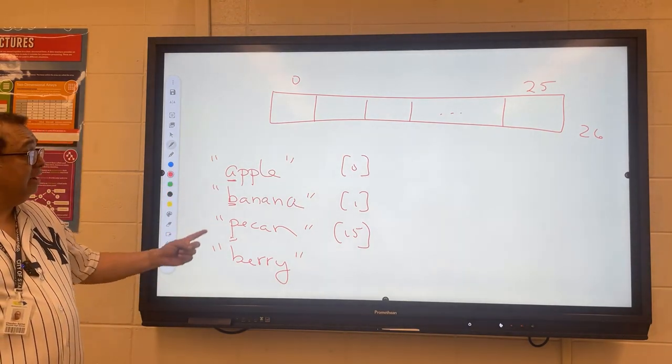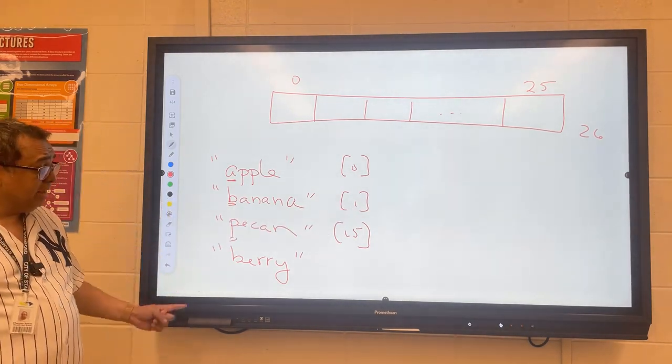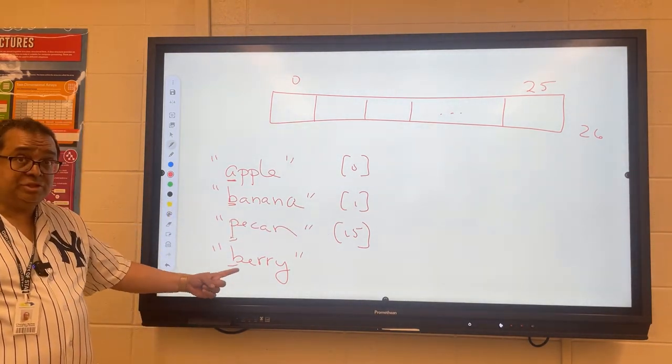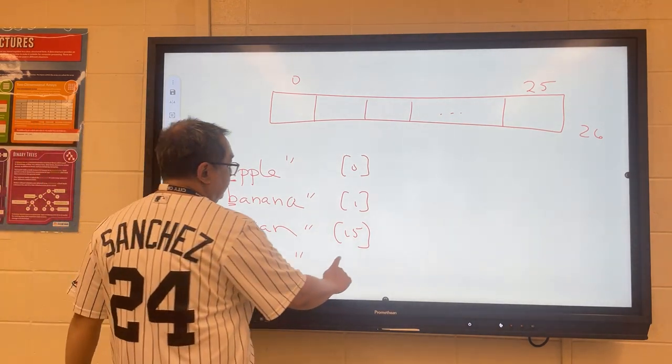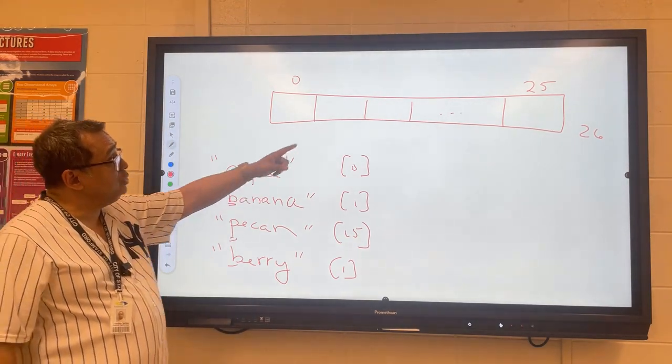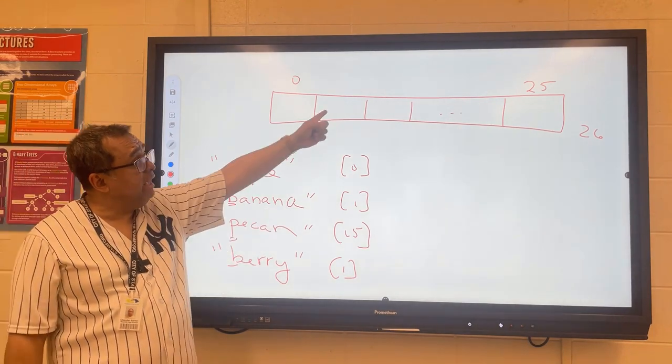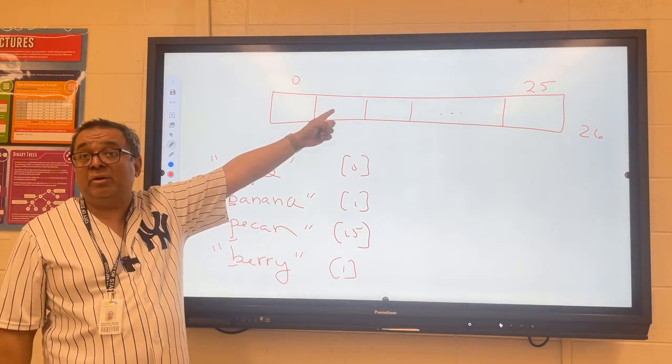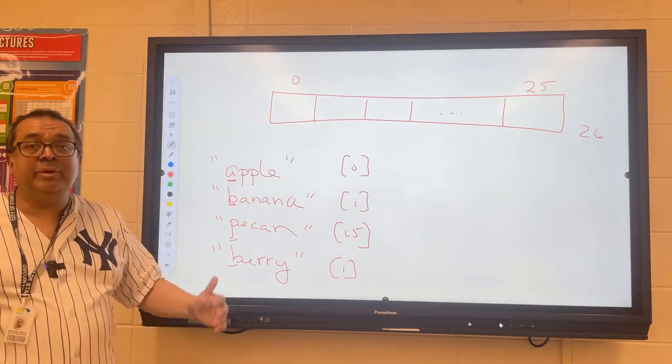When we calculate the hash code or the smart index of banana we get a 1, and then if we calculate the hash code or the smart index of berry we also get a 1. It could very well be that banana is stored over here, and then we go to store berry and we can't because the slot is already occupied by banana. When this happens we say we have a collision.